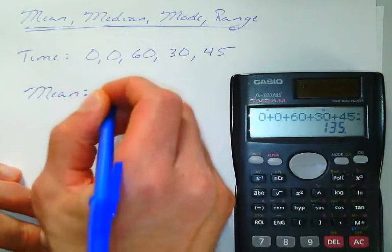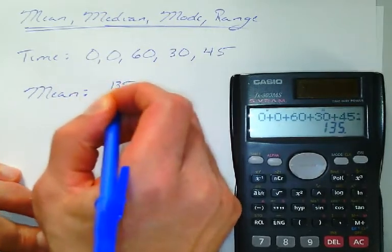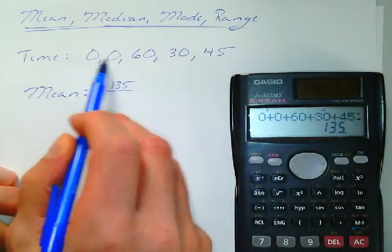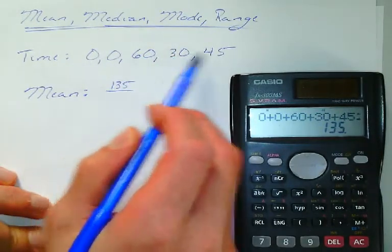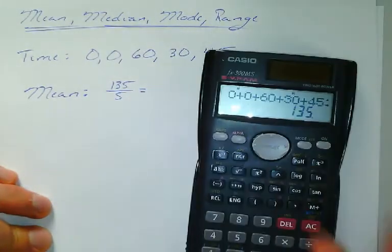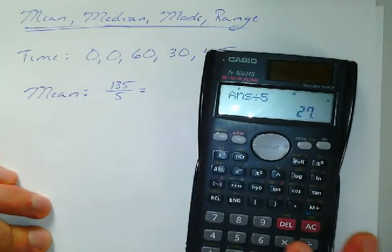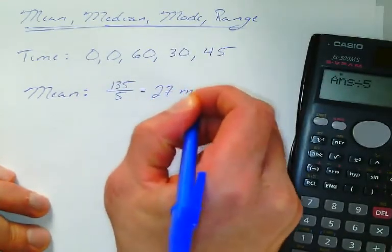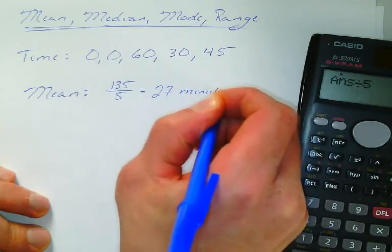Alright, so I'm going to take that sum, 135, and I'm going to divide it by the number of terms. I have one, two, three, four, five terms. So, 135 divided by 5, that gives me an average of 27 minutes per day.